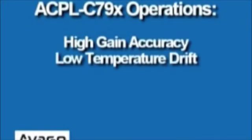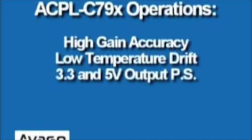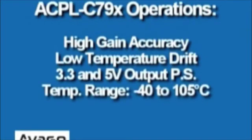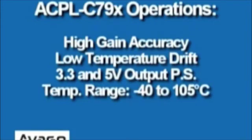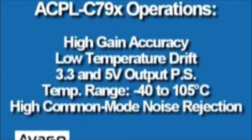Avago Technologies new ACPL-C79x miniature analog isolation amplifier features high gain accuracy, very low temperature drift, 3.3 volts and 5 volt output side power supply,